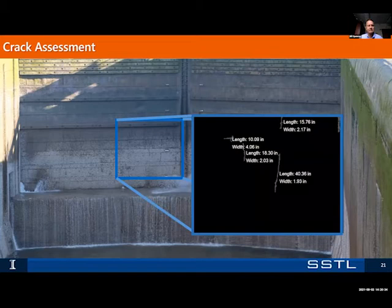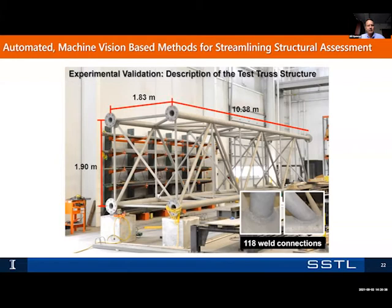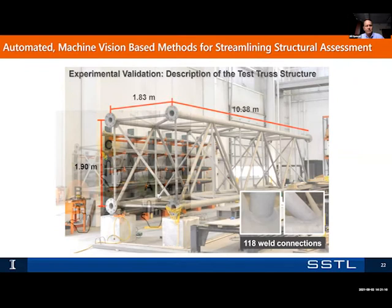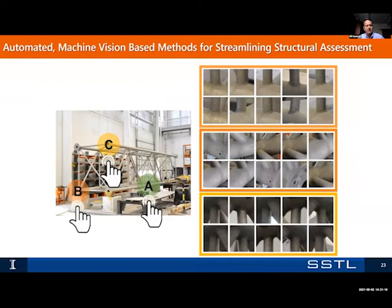This is work from Professor Shirley Dyke at Purdue University, who got her undergraduate degree at Illinois and her PhD at Notre Dame. This was a test structure in Bowman Laboratory where they wanted to do automatic inspection of joints on a truss. For a truss like this, welded joints are almost always going to see damage. There were 118 welded connections, and they used computer vision to survey those joints and assess whether there might be damage or do change detection.